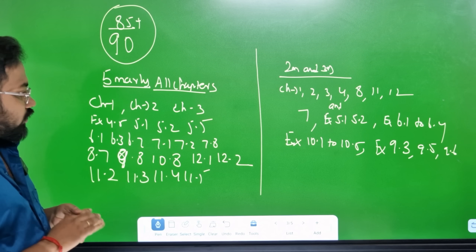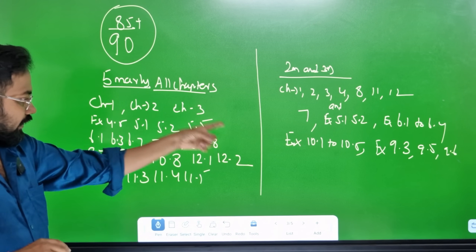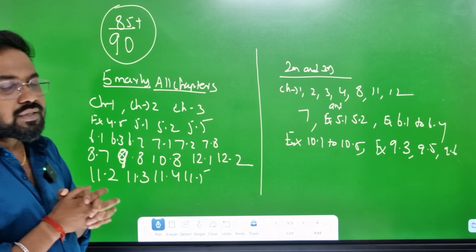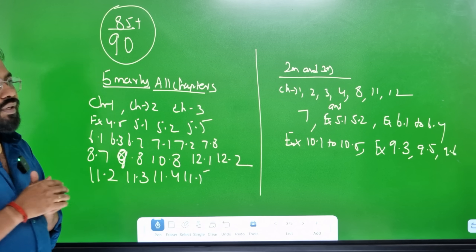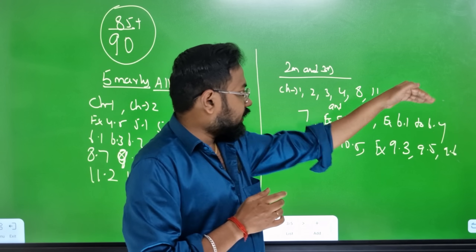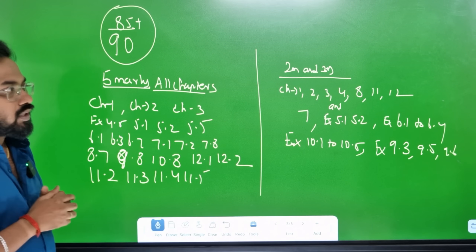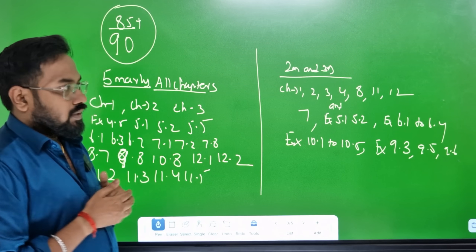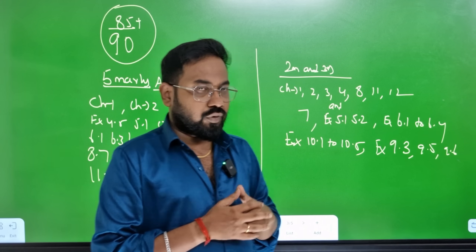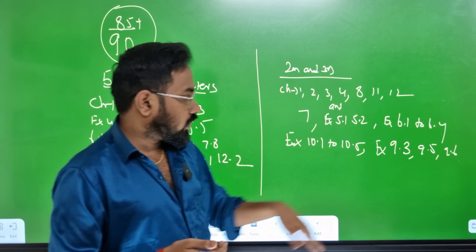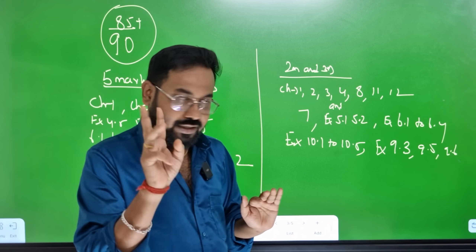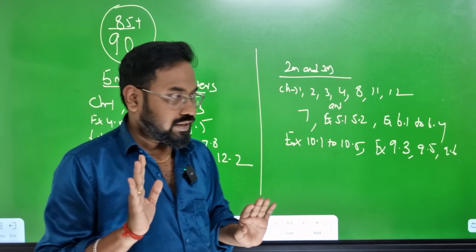If you have 5 marks in this chapter, you will have 5 marks covered. If you want to write a book-back, you can write a book-back. In this 7th chapter: 2.3 marks — chapters 1, 2, 3, 4, 8, 11, 12 of the 7th chapter plus compulsory. Chapter 7: sections 5.1, 5.2, 6.1, 6.4. 10th chapter: 10.1, 10.5 — easy. 9th chapter: 9.3 — reduction formula EC.